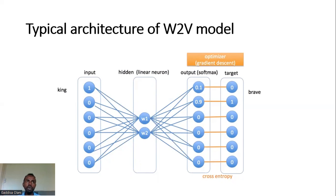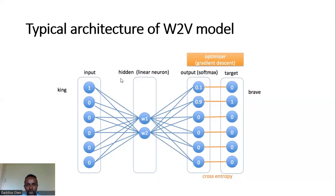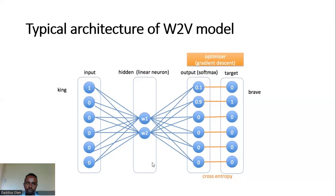Words can represent millions and millions of entries. Word order is very important in NLP. This is the word embedding of the neural network vectorization.